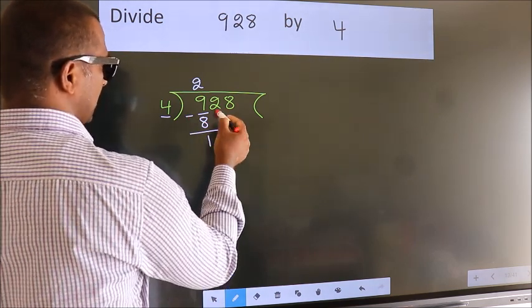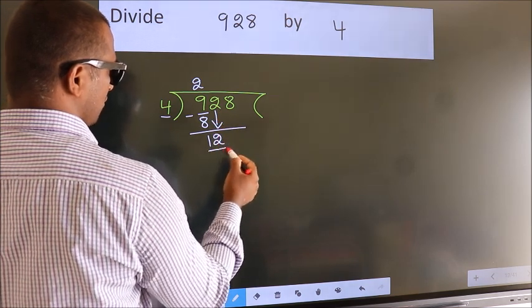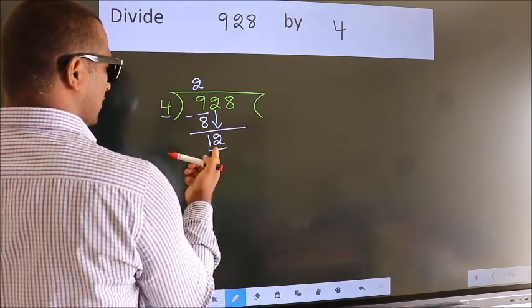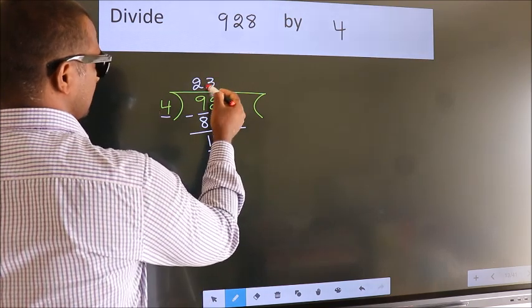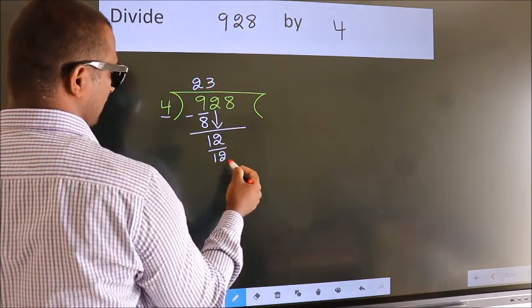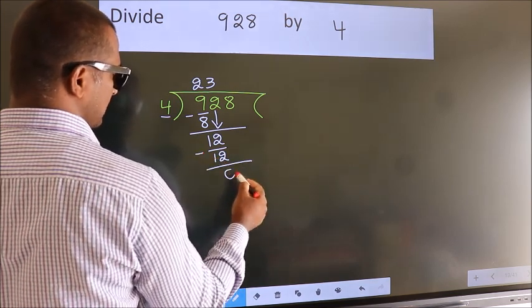After this, bring down the beside number. So, 2 down. So, 12. When do we get 12 in the 4 table? 4 threes, 12. Now we subtract. We get 0.